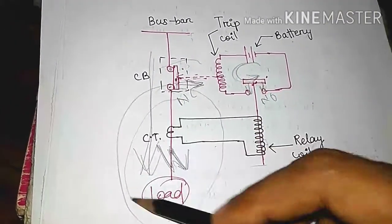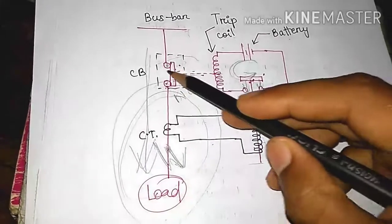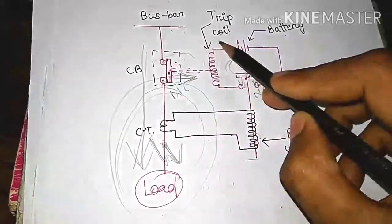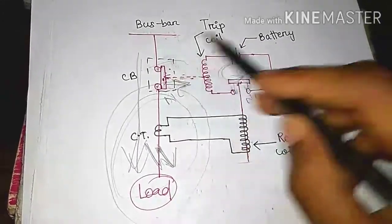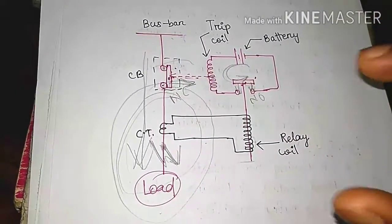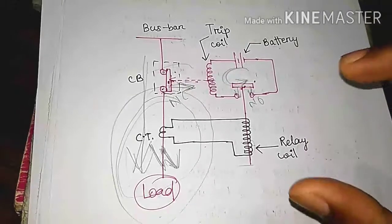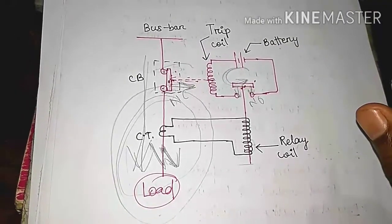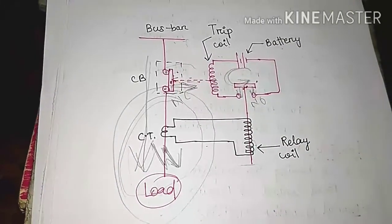Then the faulty part should be separated and the healthy part should be continued to supply. This is all about the circuit breaker operation. This is the basic operation of a circuit breaker.